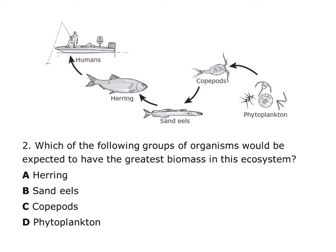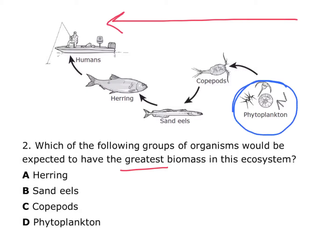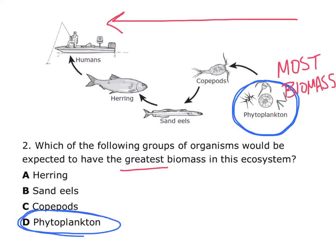The next question asks: which of the following groups of organisms would be expected to have the greatest biomass in this ecosystem? This is a straightforward question, but here's how they're trying to trick you — normally you see the producer on the left side of the food chain, but this food chain is actually going in the other direction. All the arrows are pointing to the left, so the phytoplankton is the producer, and producers have the most biomass — phytoplankton is the right answer.